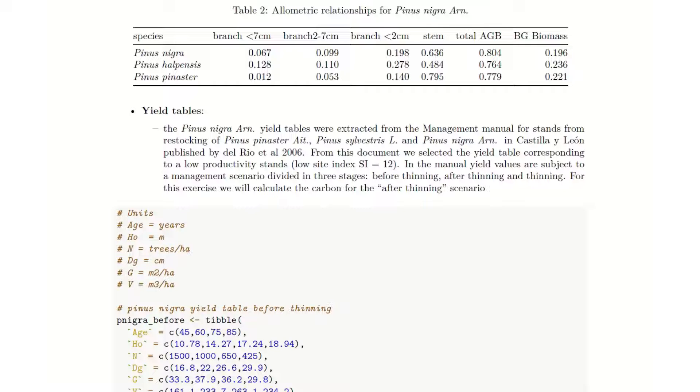In this document, we selected the yield tables corresponding to low productivity stands because we assume that the carbon calculation is going to be performed in marginal lands where low productivity is expected. In the manual, yield tables are subject to a management scenario divided in three stages: before thinning, after thinning and thinning. For this exercise, we will calculate the carbon for the after thinning scenario.